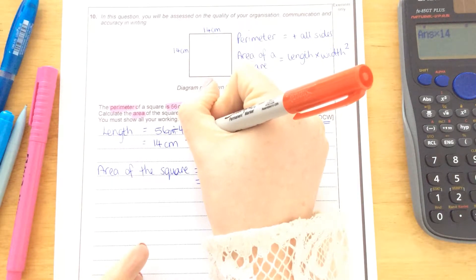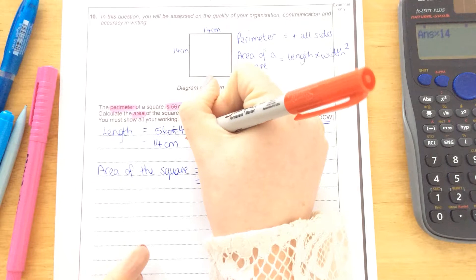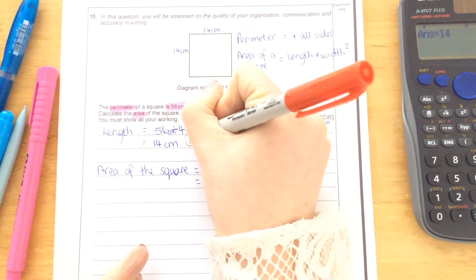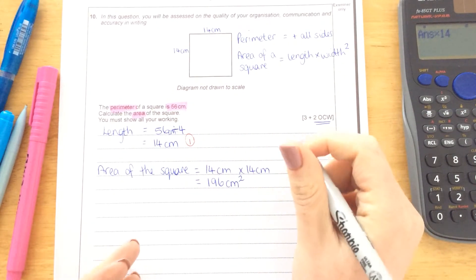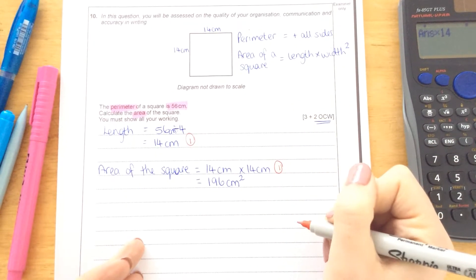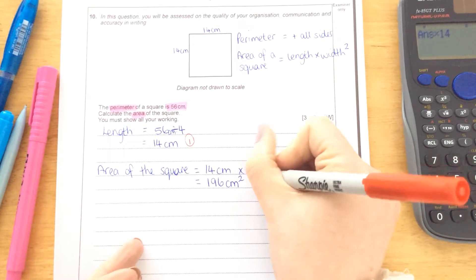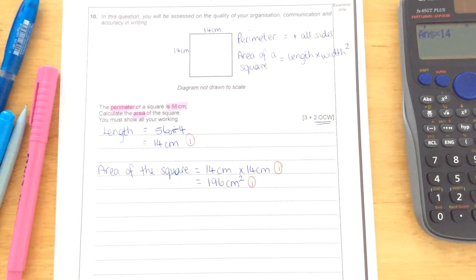So one mark for 14 centimetres. 56 divided by 4 is 14. One mark for 14 squared or 14 times 14. And the final mark then for 196 centimetres squared.